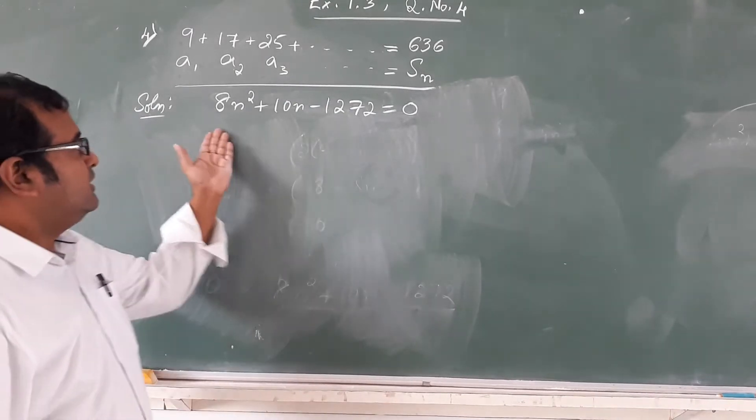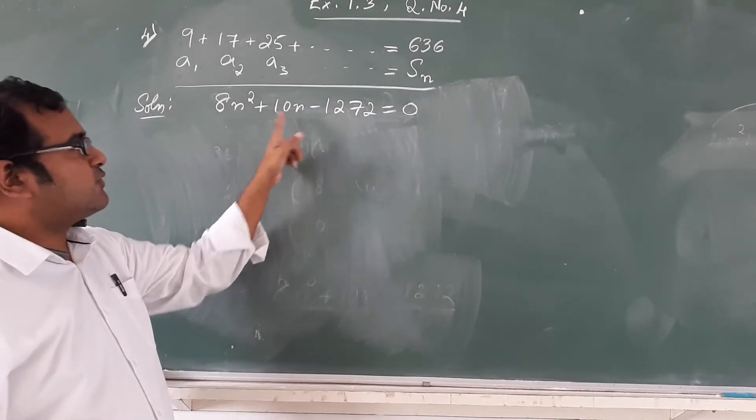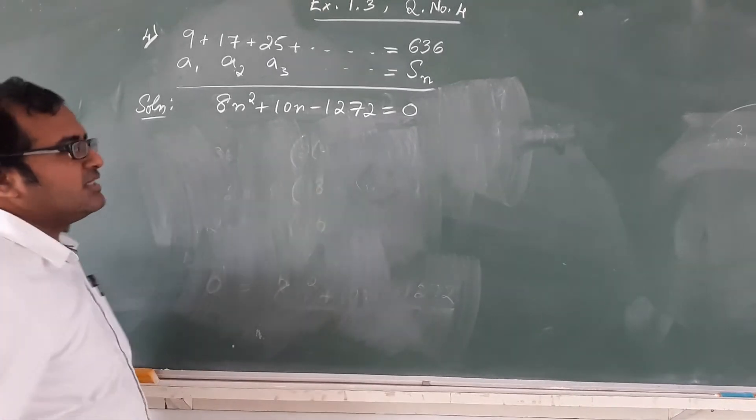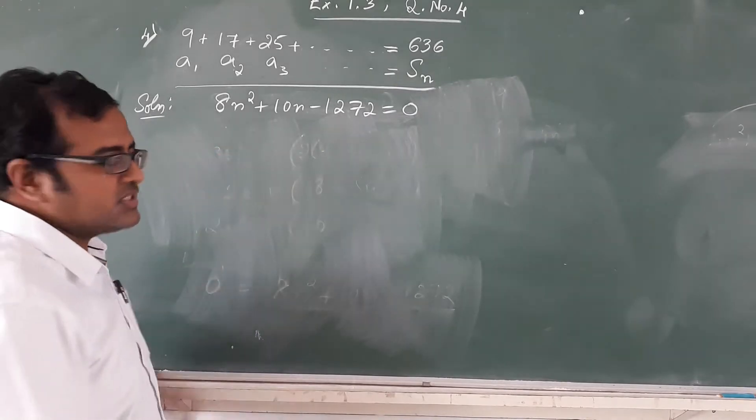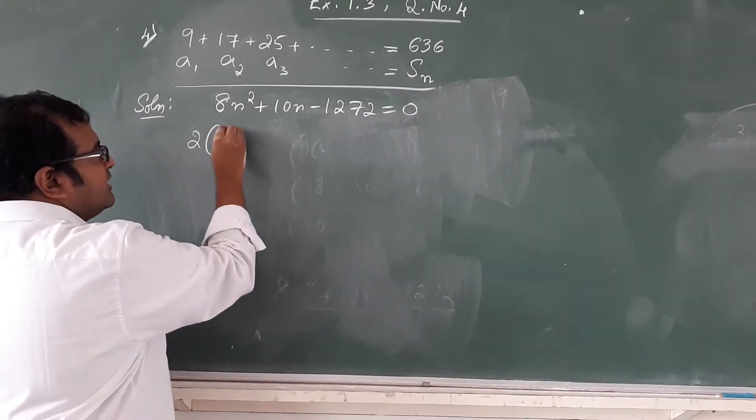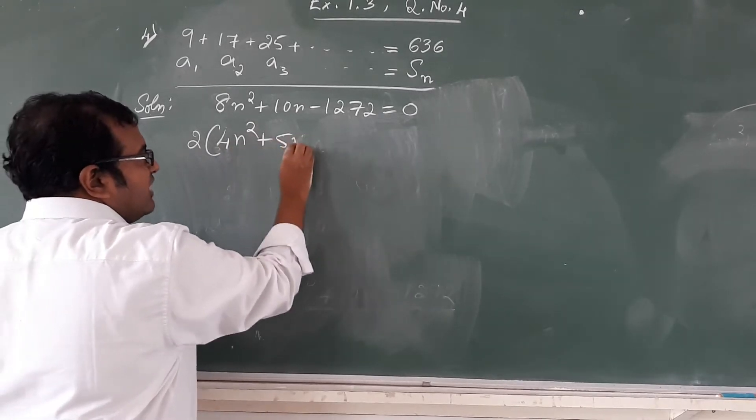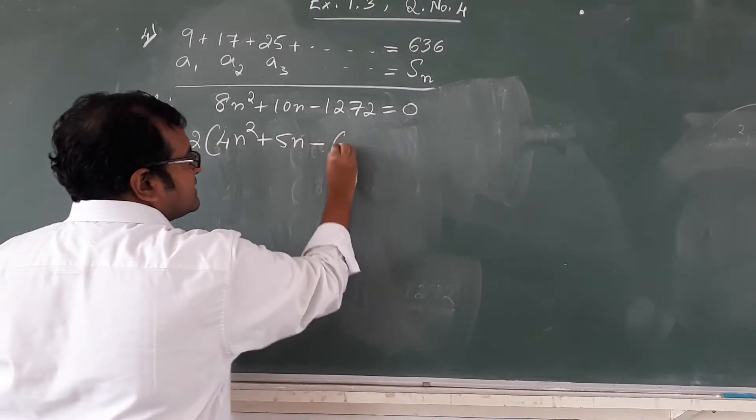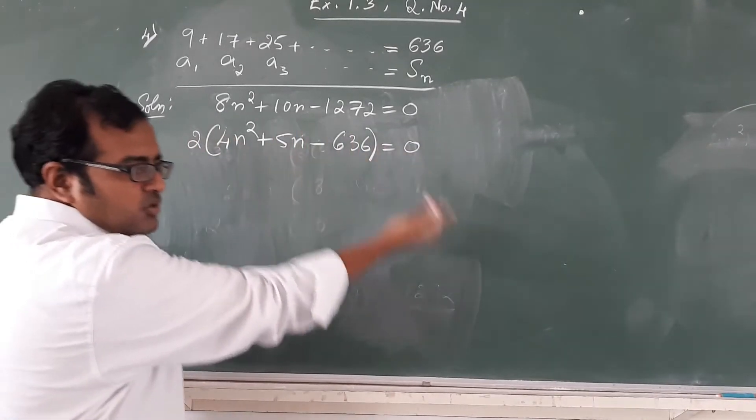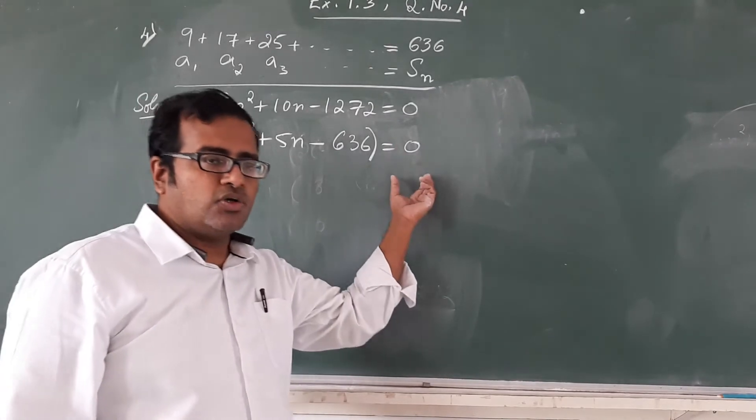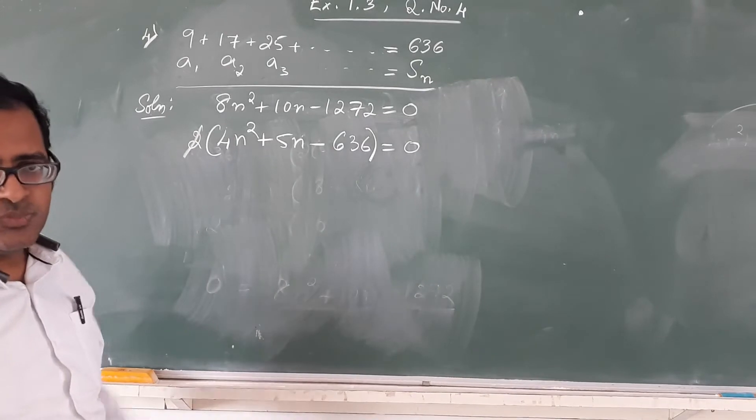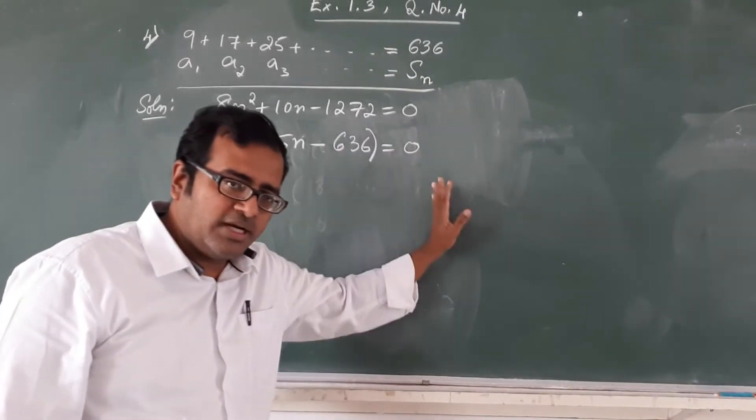So now it is time to solve the quadratic equation. 8n square plus 10n minus 1272. We can make it a little more simpler by taking out a common factor. This 2 is a common factor in all of this. We can take 2 outside and it becomes 4n square plus 5n minus 636 which equals 0. 2 multiplied by 2 and it goes to the other side, we take it as 0 upon 2. 0 divided by anything is 0, so we can neglect the 2.